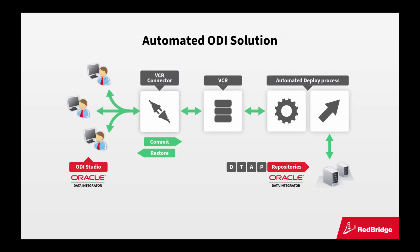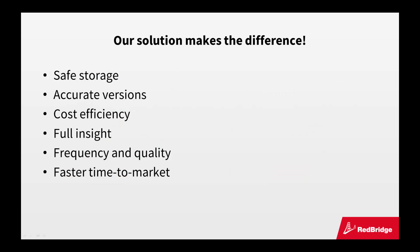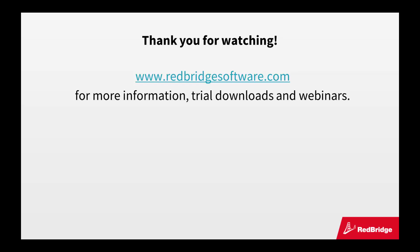Here ends our series on lifecycle management for ODI. We have achieved a fully automated lifecycle using ODI as development environment, the VCR for ODI connector to ensure the link between ODI and Subversion, and ICAN-ALM to connect with Subversion and automate the build and deploy process. On top of that, we made use of the integrated ICAN-ALM approval system and established the link with the issue tracking system, allowing easy follow-up of issues linked to a build or deploy. We hope we convinced you that our solution really makes the difference when it comes to lifecycle management for ODI — it guarantees safe storage, accurate versions, cost efficiency, and full insight in the development process, with a substantial impact on deployment frequency, quality, and time to market. For more information on our company and products, we invite you to visit our website.